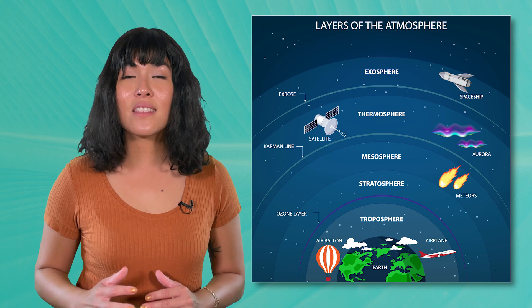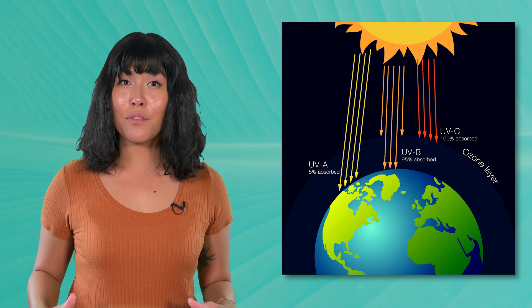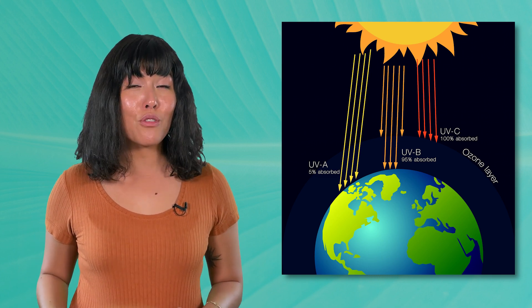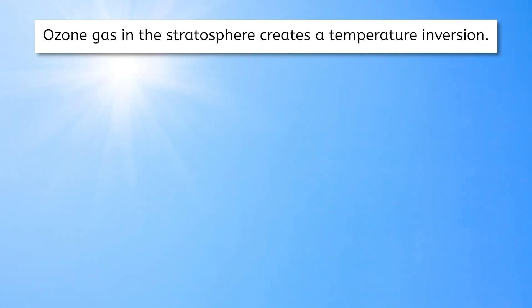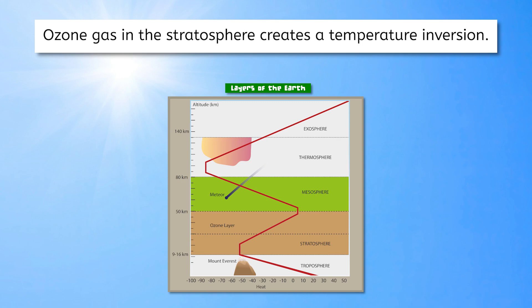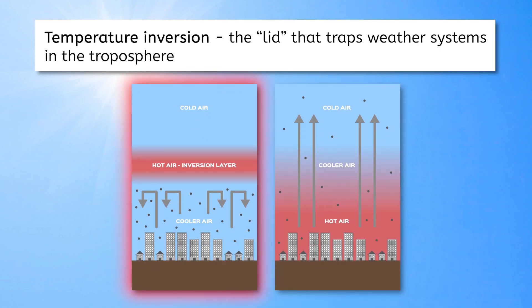Actually, we have our stratosphere to thank for that. The stratosphere right above has the ozone layer, protecting us from some harmful UV rays. This layer of ozone gas also influences weather patterns by absorbing sunlight, which affects the temperature and movement of air masses below. The absorption of sunlight by ozone warms the stratosphere, creating a temperature inversion. This means that unlike the troposphere, the temperature in the stratosphere increases with altitude. This temperature inversion acts as a lid, trapping weather systems in the troposphere and preventing them from rising into the stratosphere.